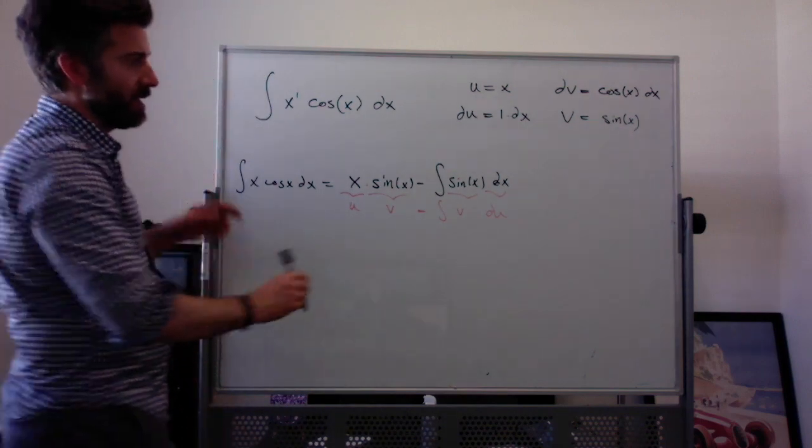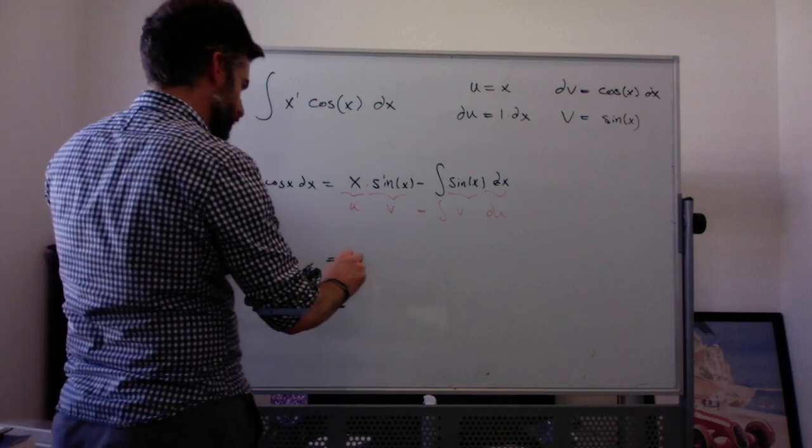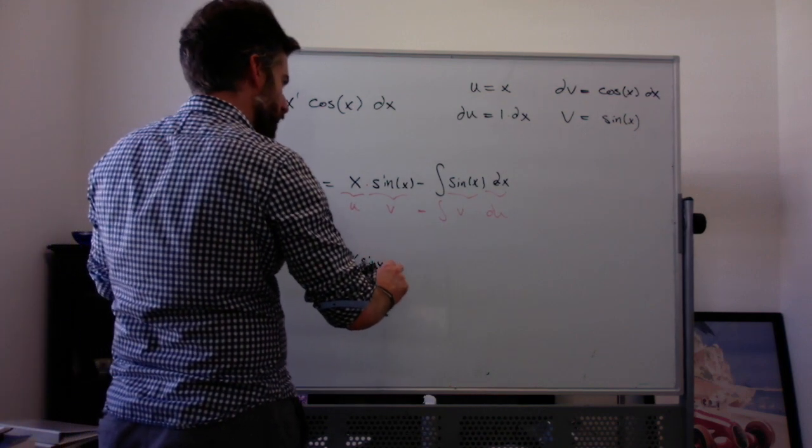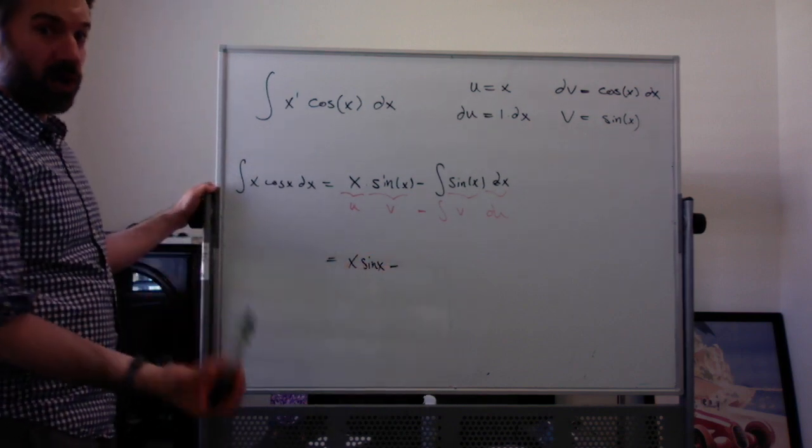And the whole point is that now this thing is easier to integrate. And we can say that this is equal to x sine of x, minus the integral of sine. The integral of sine is negative cosine.